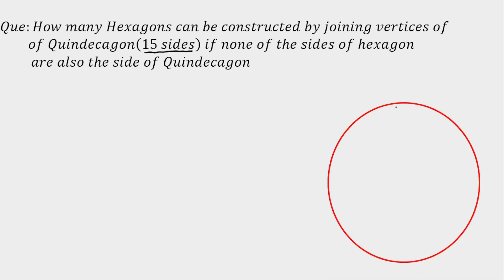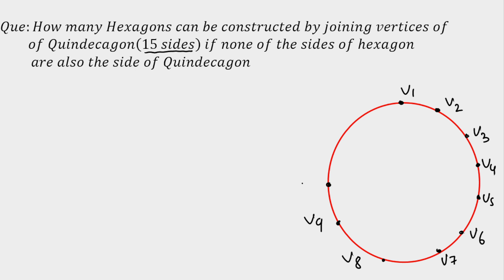First, I am going to draw the quindecagon on a circle. So let's say the vertices are v1, v2, v3, v4, v5, v6, v7, v8, v9, v10, and so on going all the way to v15.